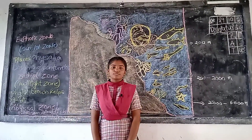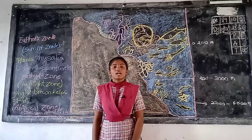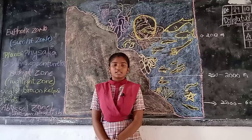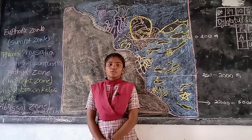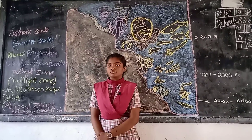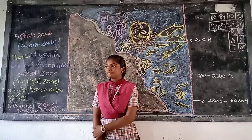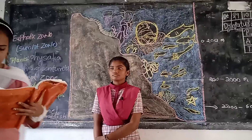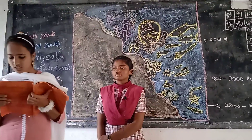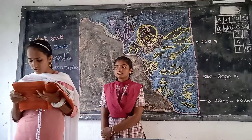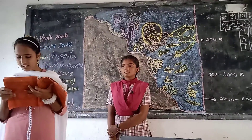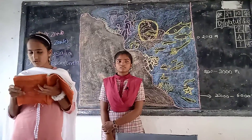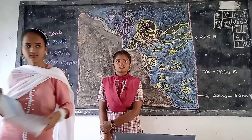Now I am asking you a few questions. Name the plants and animals living in the euphotic zone. Planktons, algae, dolphins, flying fish, fish, sea plants, sea animals, etc.